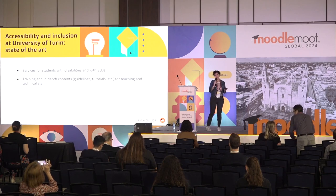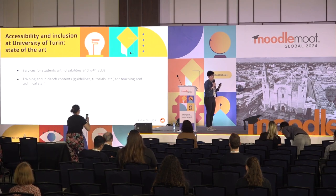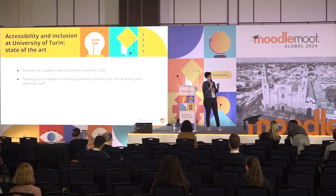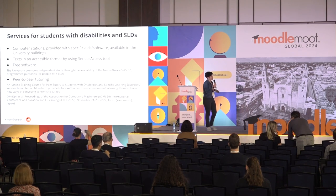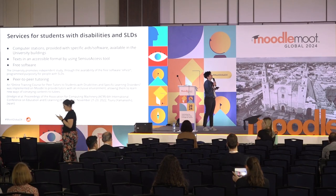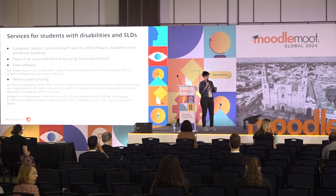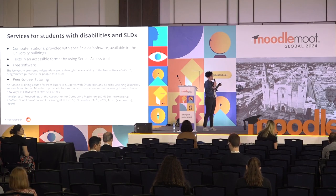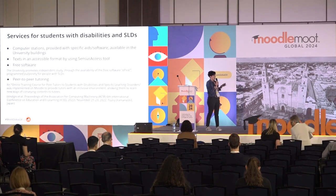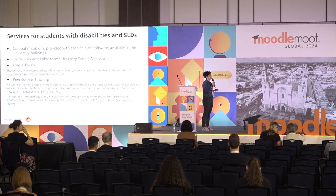Accessibility and inclusion is of paramount importance at our university. For these reasons we offer a lot of services for students and also for teachers, teacher staff, and technical staff. For students we offer, for example, computer stations provided with specific aids and software. We offer census access tools to make text in accessible format, or other kinds of free software such as Epico. Beside these technical aids we also offer peer-to-peer tutoring.